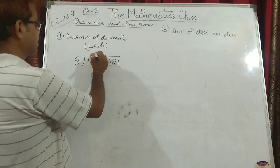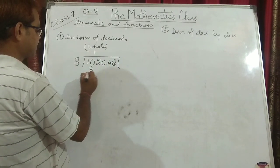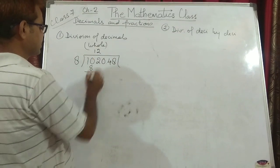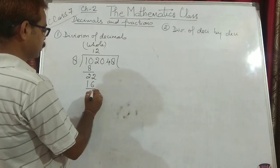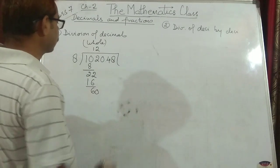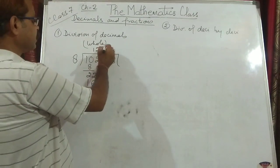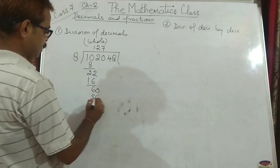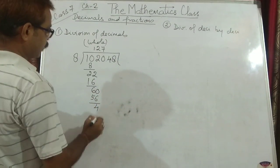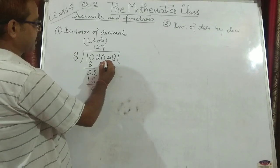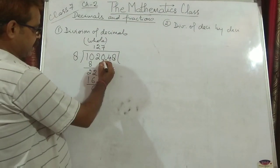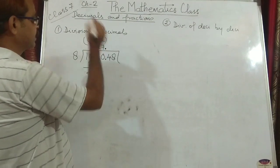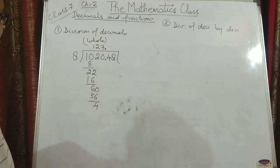So 8 into 1 is 8. How much is left? 2. Carry down: 22. 8 into 2 is 16, so it will come 6 and 0 — remainder 16. Now 8 into 7 is 56. What is left? 4. Now you will find a decimal over here. So after 20, this decimal will be aligned with this quotient like this.